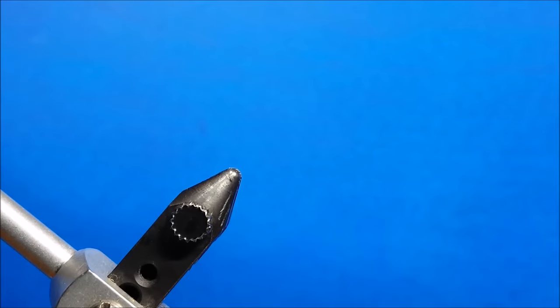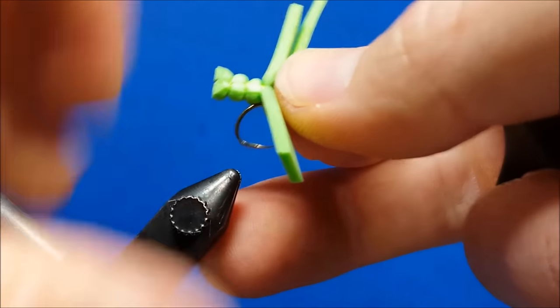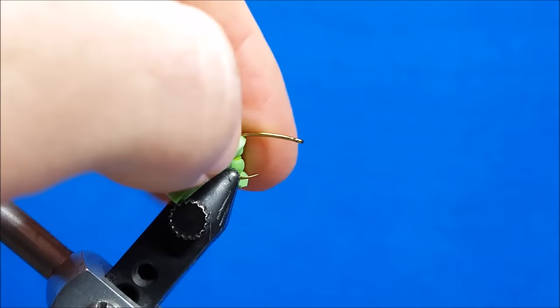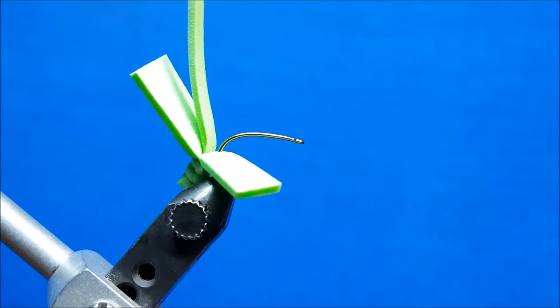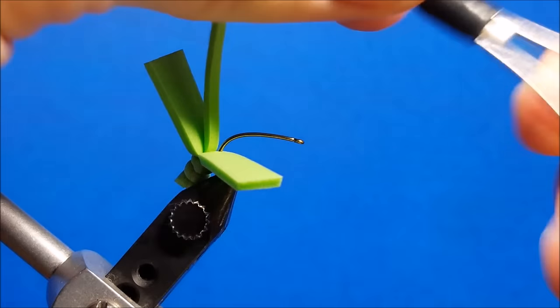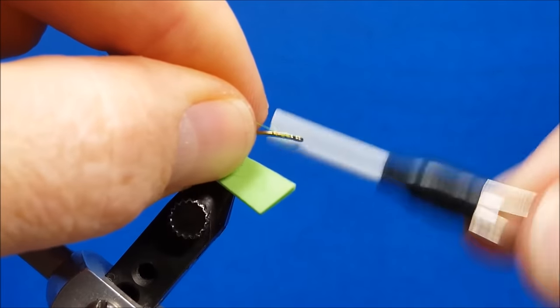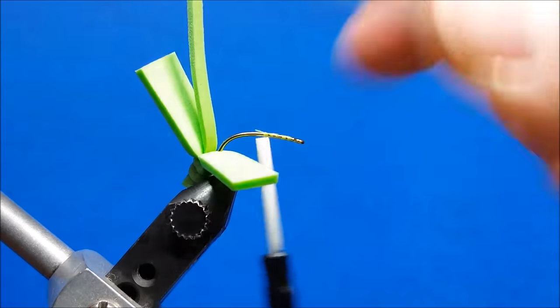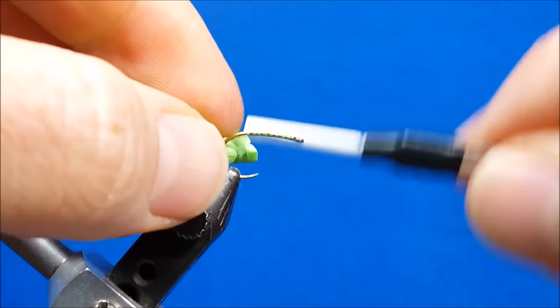Slide that through, slide this into the vise here, grip it down, and then just slide that foam down the hook shank. At this point, I'll come back with my thread, and I'm going to cover this whole hook shank with thread. I'm going to go back to the bend of the hook, return it forward, all the way up behind the eye of the hook.